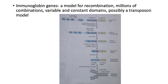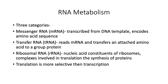Immunoglobulin genes are a model for recombination. There are millions of combinations. The gene has variable and constant domains — this is a transposon model. Here are the variable segments, the constant segments, and the germline. These are processed through as you progress through maturation: DNA of the B lymphocyte, primary transcript, processed messenger RNA, light chain polypeptide, cleaving to the heavy chain. You get the antibody molecule with the variable components and the constant components of the heavy chain. And that will do it. Thank you very much.